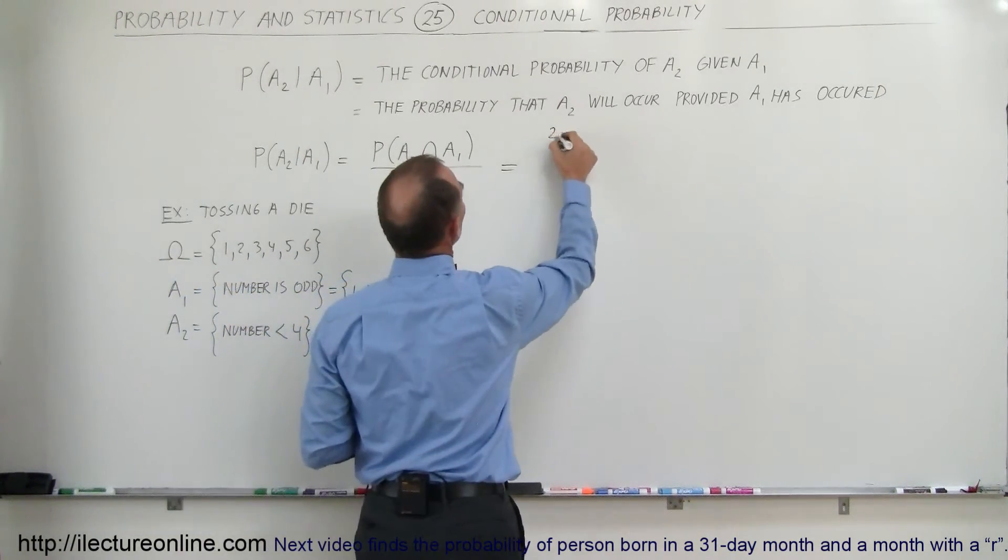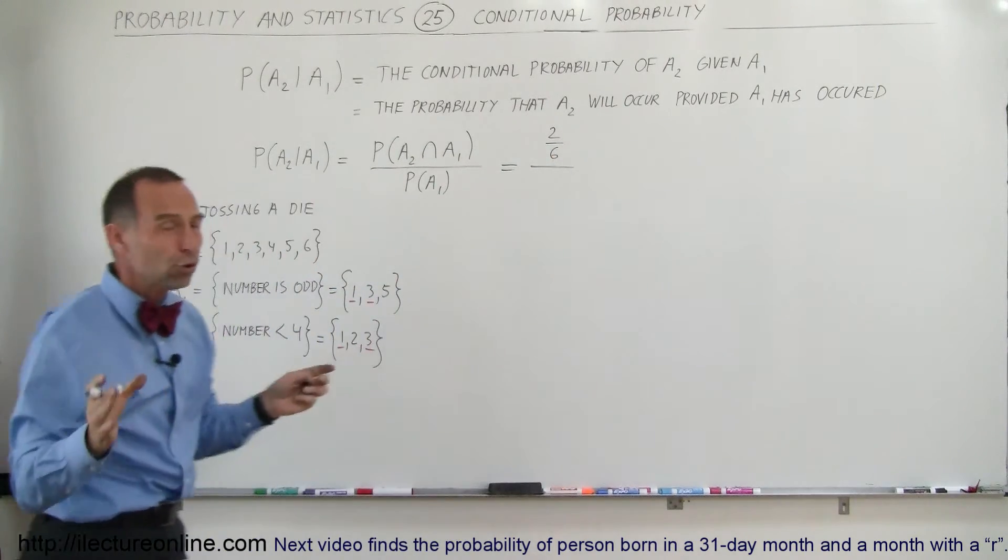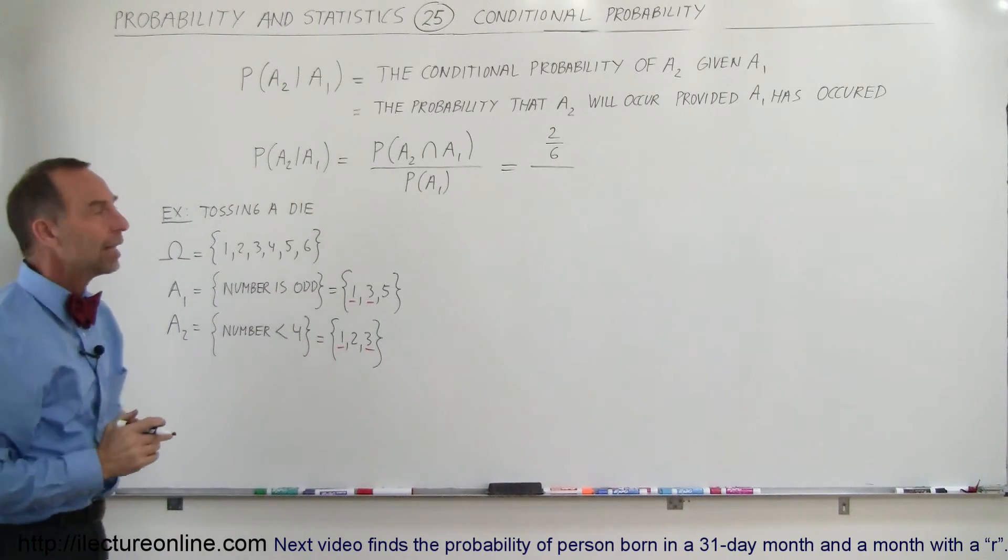Therefore, the probability is 2 divided by 6, since 6 is the sample space and 2 is the number of elements that belong to both A1 and A2.